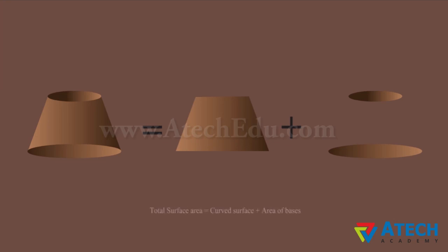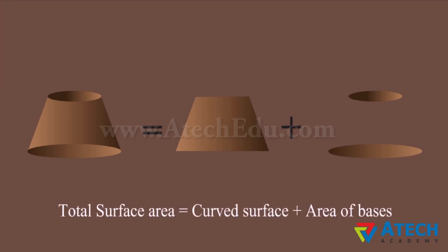The total surface area of the frustum of a cone is made up of the curved surface area and the area of the two bases.